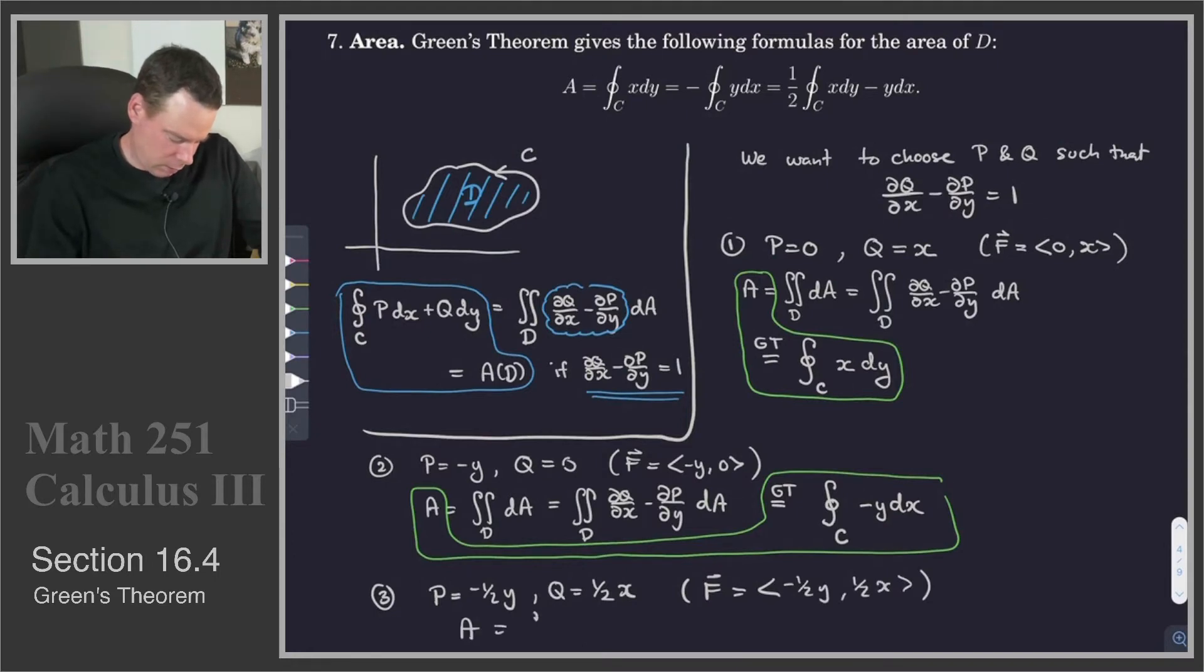Area is, again, the integral dA, which is the integral of, because of this choice of P and Q, dQ/dx minus dP/dy is equal to 1. So we get this expression.